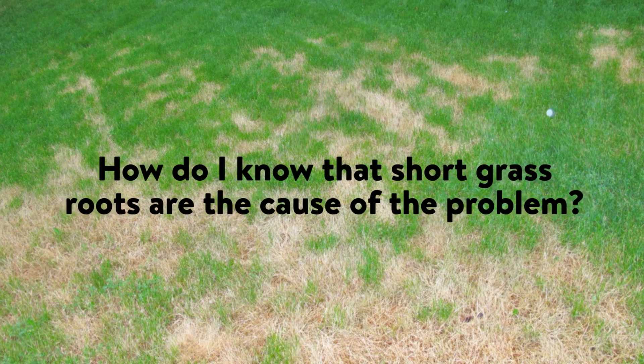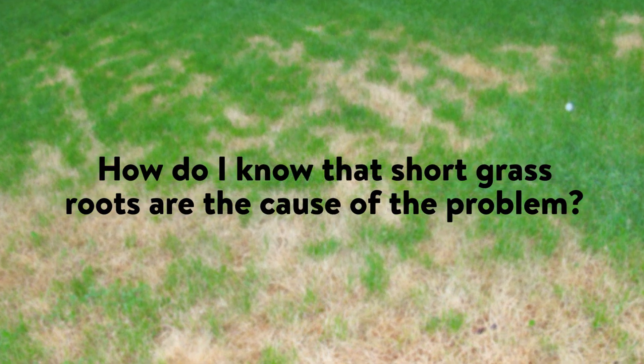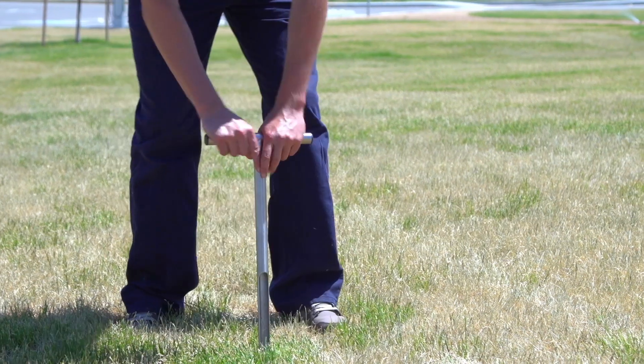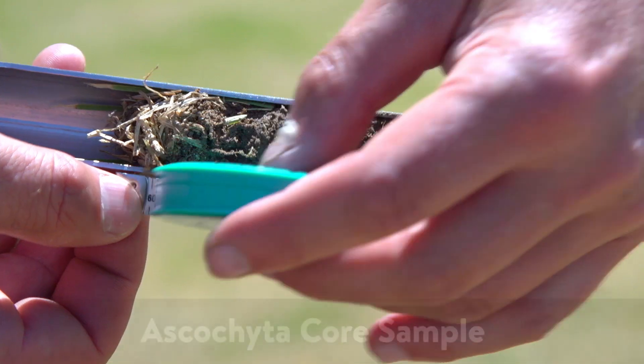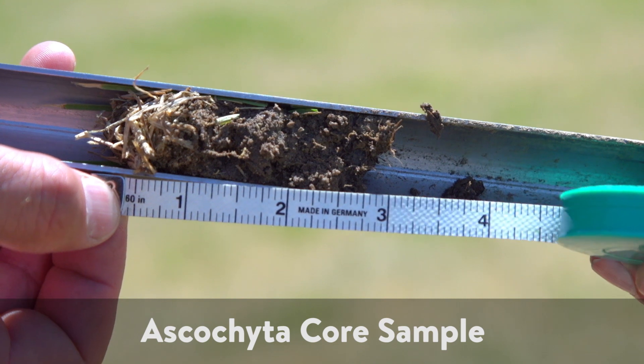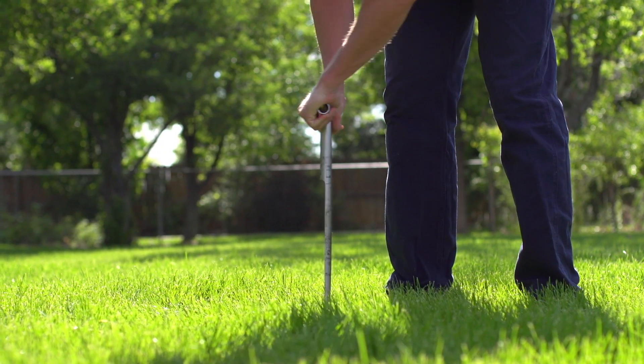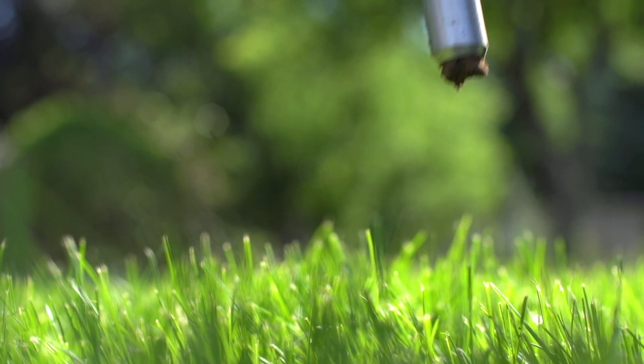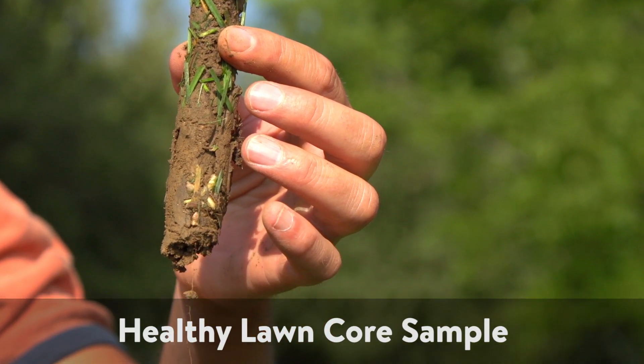Ascochyta is a symptom of a problem, and this minor stress fungus is telling us that the grass's roots are shallow. I've seen thousands of cases of Ascochyta, and every time I take a core sample using my soil sampler, 100 percent of the time the grass roots will only be one to four inches deep. A normal and healthy grass root depth is somewhere between 6 and 12 inches deep.